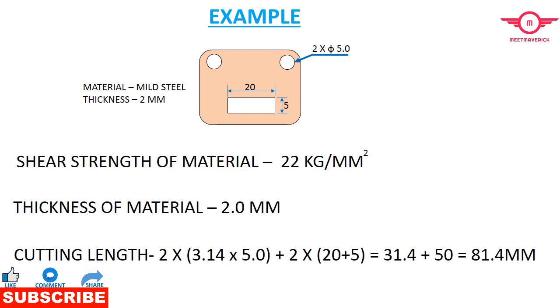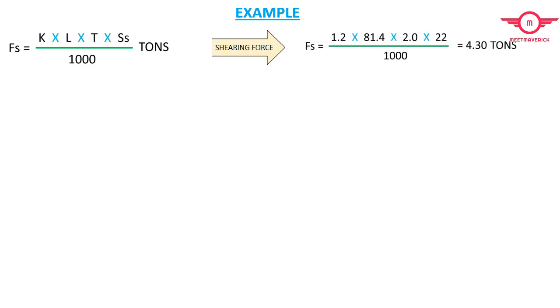Pi D is the circumference of the hole, so cutting length of the hole is 2 times pi times diameter, which is 31.4. For the slot size of 20 by 5 mm, the cutting length of the slot is 2 times 20 plus 5, which equals 50. So total cutting length is 81.4 mm.